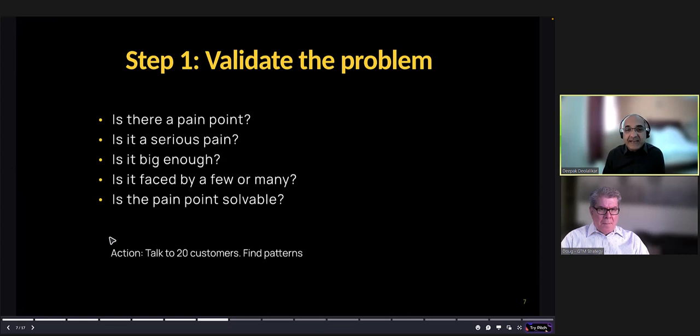Step number one is validate the problem. Is there even a pain point? You are building this fancy AI algorithm to predict something, and you go to a customer, and they say, you know what, it's okay. I can live with it. Is it even a serious pain? Is it big enough? Is it faced by a few people or many people? When you talk to friends, and a few of your friends have a problem, but not all of them have the same problem. But if all of them have a similar problem, maybe there is a need for a solution in there. If it is only a few people have that specific problem, maybe it's not worth investing a product in there. And finally, is the pain point solvable? Not everything is solvable.